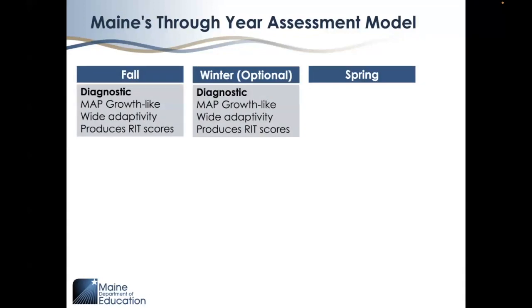The fall and winter assessment administrations are diagnostic assessments that contain only questions from the NWEA Map Growth Question Bank and have the same wide adaptivity across multiple grade levels. Similar to the Math Growth Assessment, the fall and winter administrations of the three-year assessment produce RIT scores.